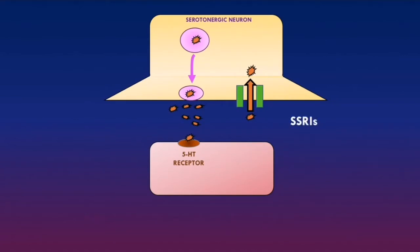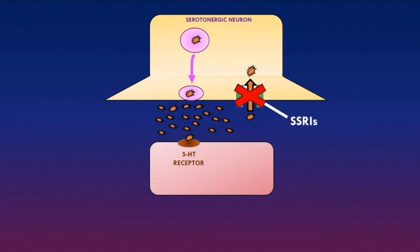SSRIs interfere with this process by inhibiting the serotonin reuptake transporters, thereby inhibiting serotonin reuptake back into the presynaptic neurons. This means more serotonin accumulates within the synaptic cleft, increasing its availability to bind to serotonin receptors on the postsynaptic neurons and trigger an action potential. The increased availability of serotonin is thought to help with the symptoms of clinical depression based on the monoamine hypothesis. SSRIs are the first-line pharmacological agent used to treat clinical depression.